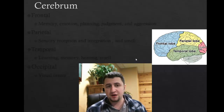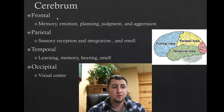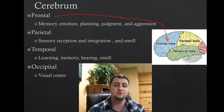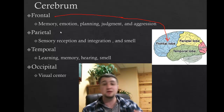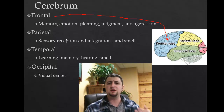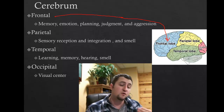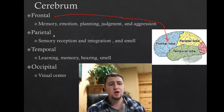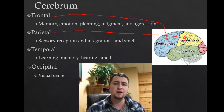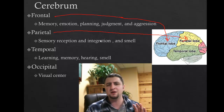The cerebrum has four parts. The frontal lobe is responsible for memory, emotions, planning, judgment, and aggression. Malfunctions in the frontal lobe primarily cause people to be overly aggressive, exhibit poor judgment, and plan poorly. The parietal lobe is responsible for sensory reception, integration, and smell.